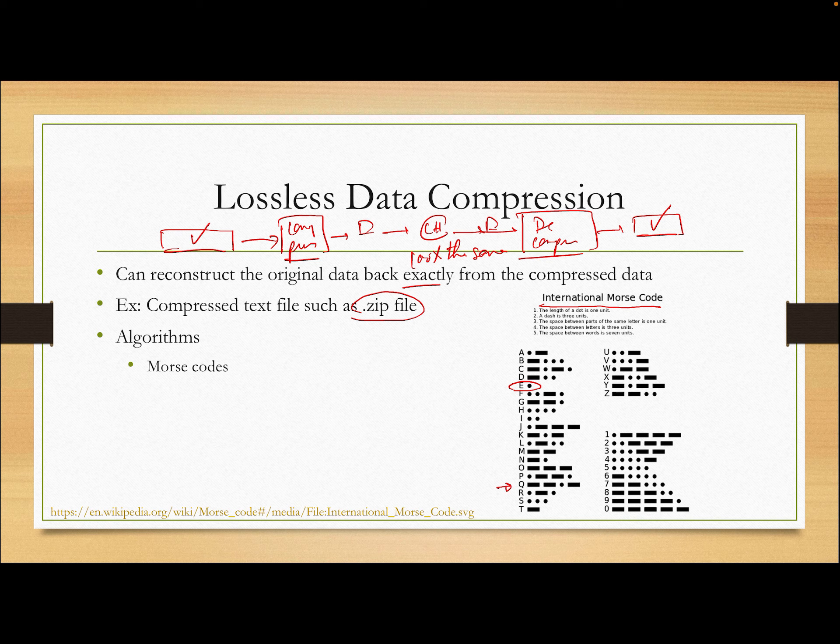So this is good. Example is compressed text file, just as the .zip file that you can unzip it. The algorithm that we may have heard, the popular algorithm. The first one is called Morse code. I think people are familiar with Morse code.